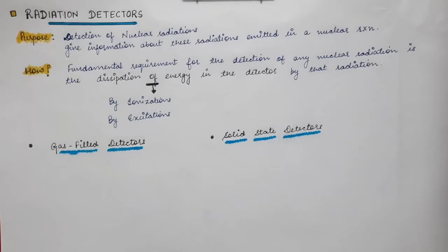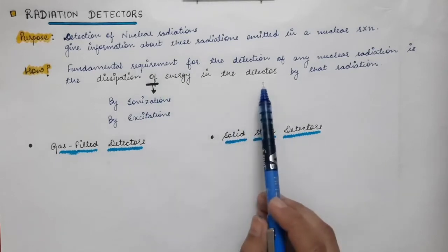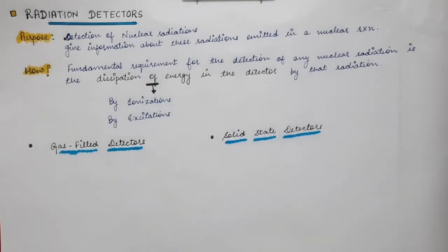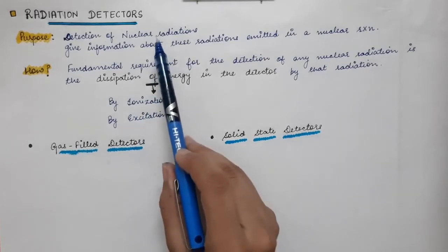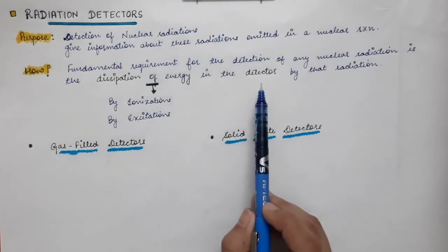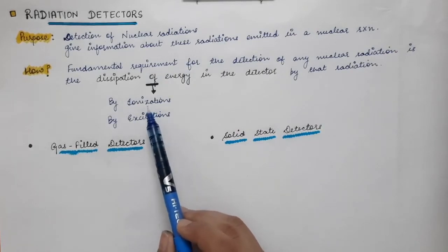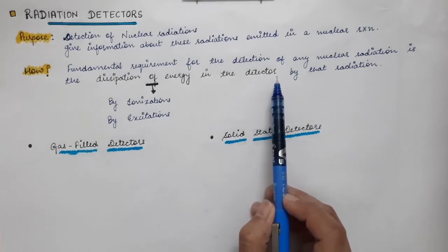If the incoming particle does not transfer its energy at all and passes through the detector unchanged, then obviously there will be no detection. So the incoming nuclear radiation must transfer its energy to the medium of the detector, only then the particle can be detected. By dissipation of energy we mean there can be ionizations — when a nuclear radiation like alpha, beta, or gamma passes through the medium, it can cause ionizations.